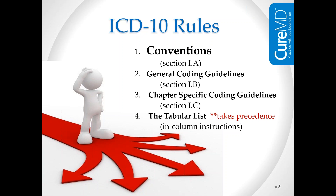The specialty-specific trainings will be available later after we've gone through all the fundamentals. The fourth type of rules are those that show up in the tabular list, right next to a code in the column. An instruction might say 'for this code, always do it this way' or 'consider this other code.' These instructions take precedence — they win, even if they contradict chapter-specific or general guidelines. You should follow those rules first and foremost.